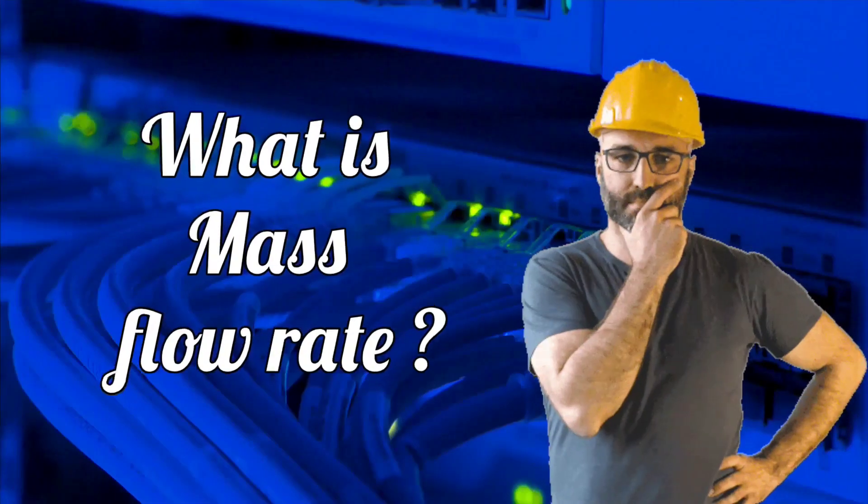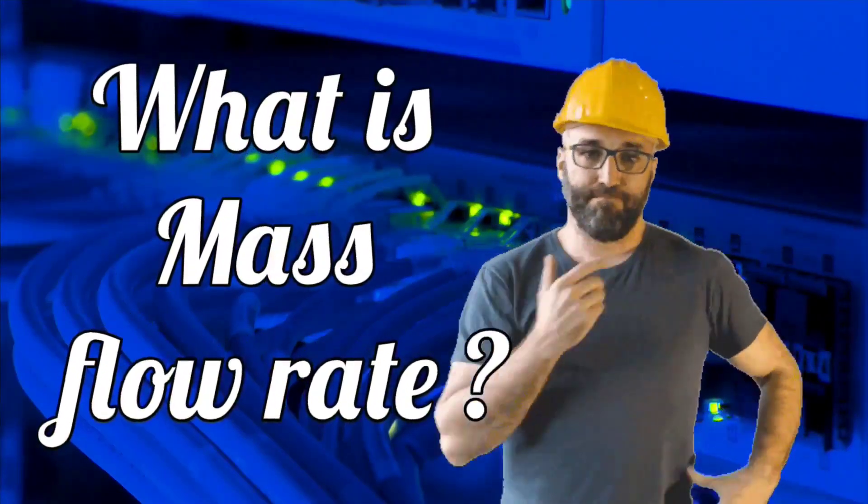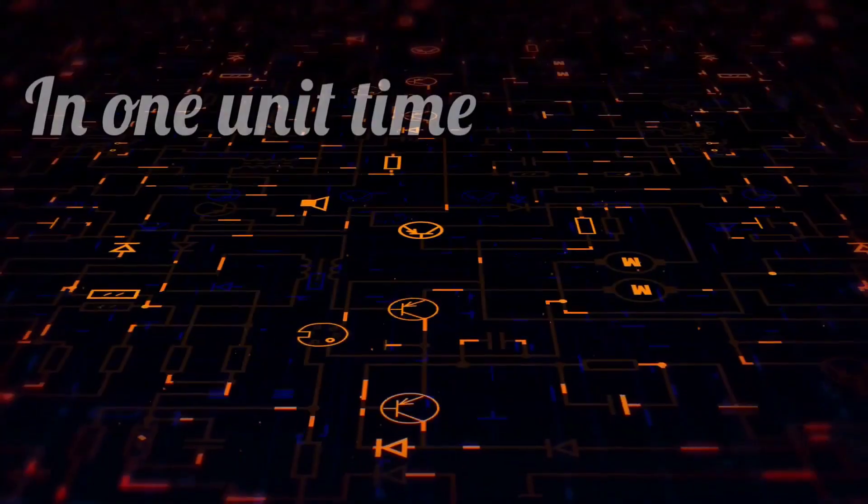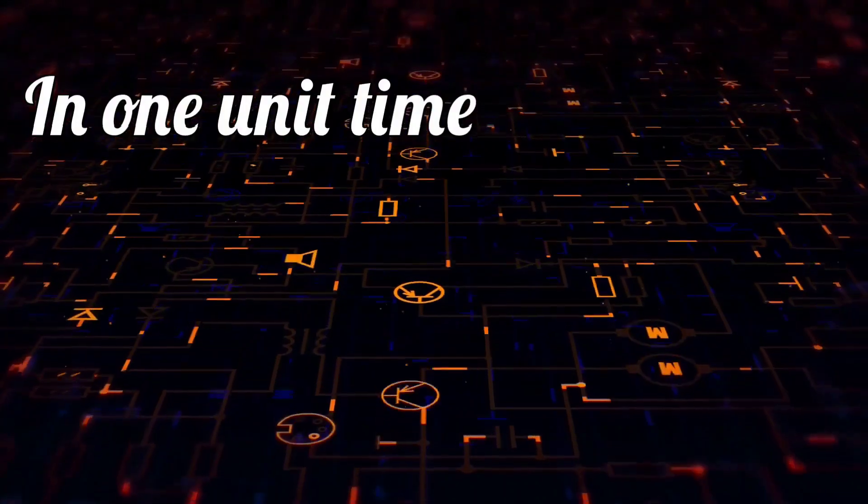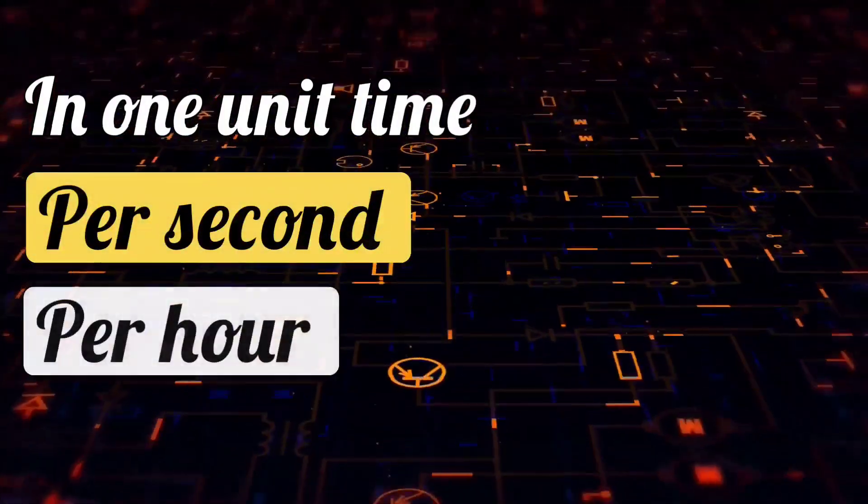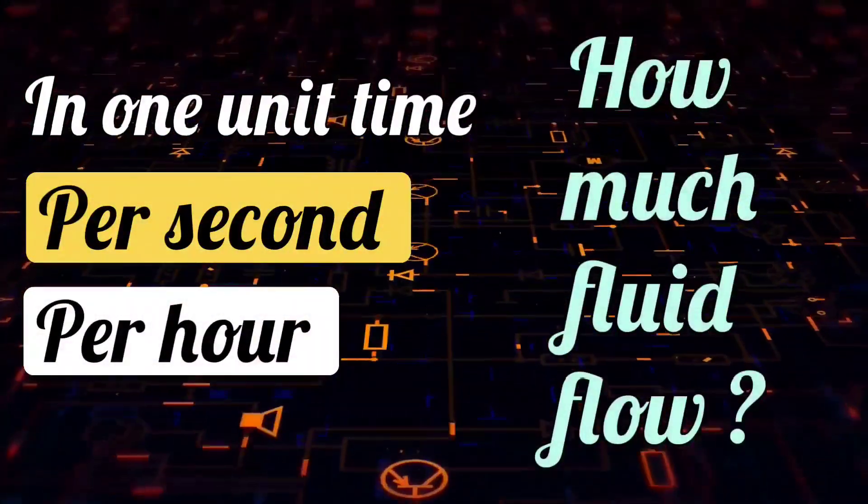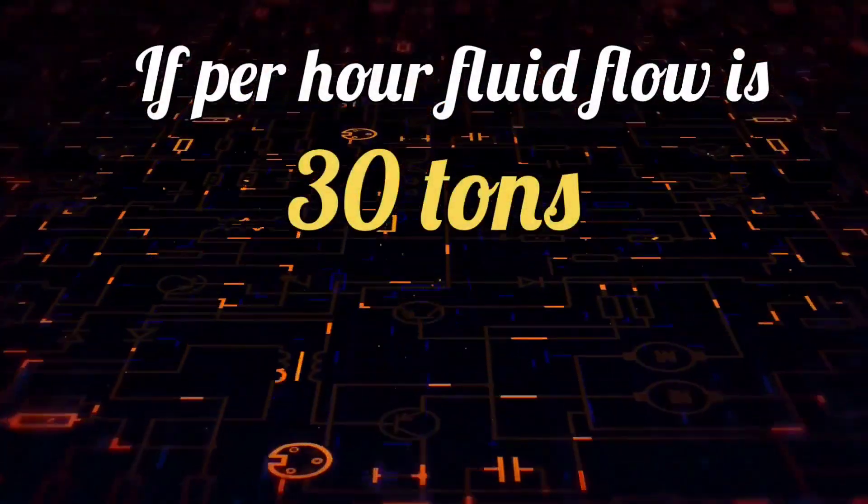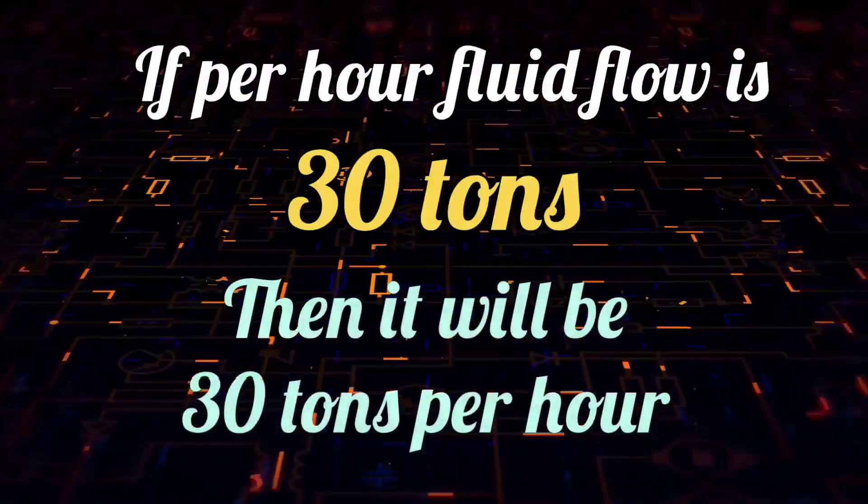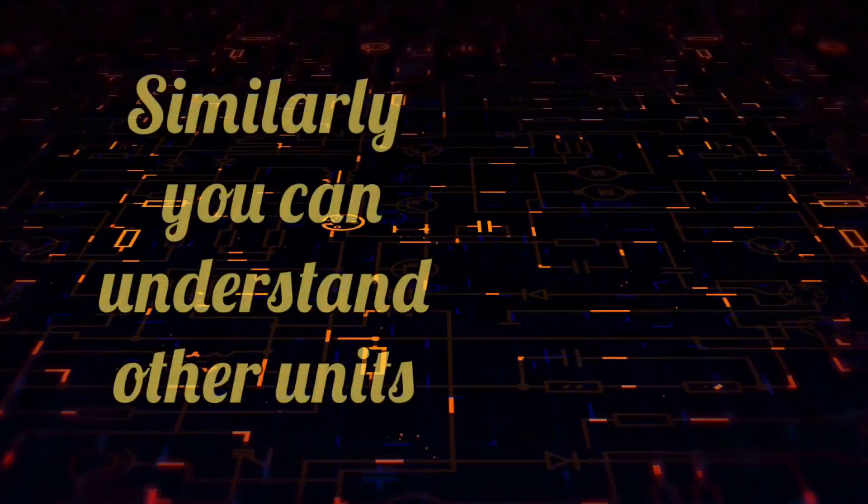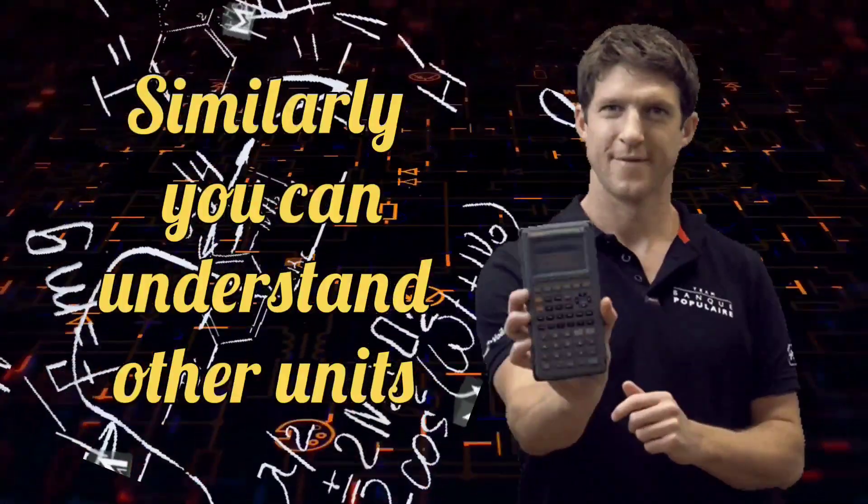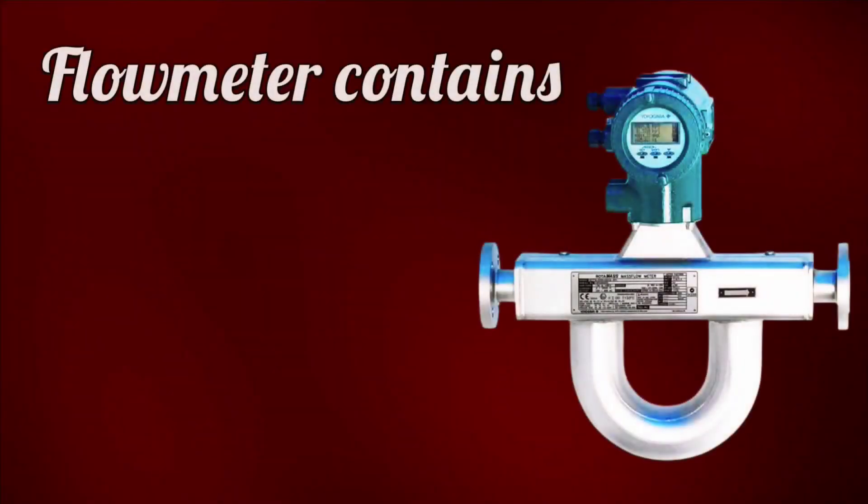Friends, let us understand the mass flow rate. What is this mass flow rate? Mass flow rate means in a unit time, meaning per second or per hour, how much fluid flows? If per hour 30 tons fluid flow, so it became 30 tons per hour. Similarly, you can also understand other units of mass flow rate.